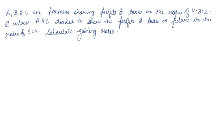A, B and C are partners sharing profits and losses in the ratio of 4:3:2. B retires. A and C decided to share the profits and losses in the future in the ratio of 5:4. Calculate gaining ratio.